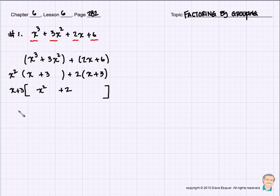So to clean it up, we're left with x squared plus 2. The final factored form is (x plus 3)(x squared plus 2).